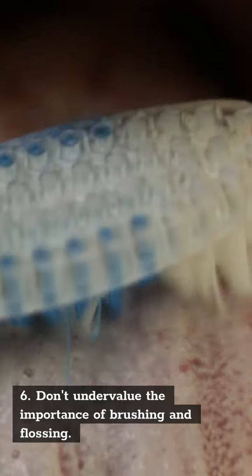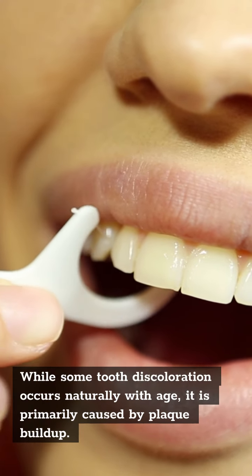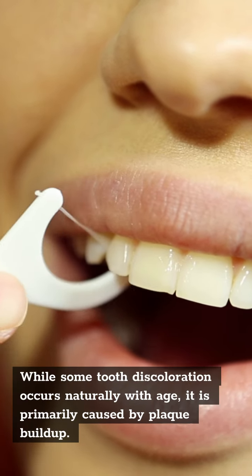Number six, don't undervalue the importance of brushing and flossing. While some tooth discoloration occurs naturally with age, it is primarily caused by plaque buildup.